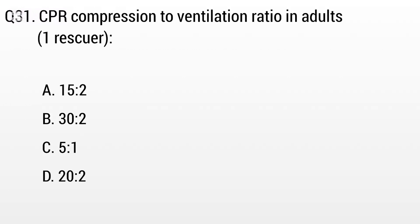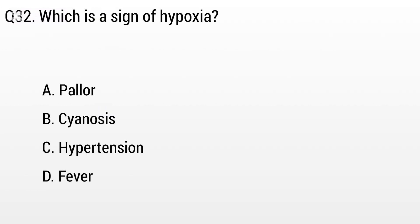Question 31: CPR compression-to-ventilation ratio in adults? The right answer is option B: 30 to 2. Question 32: Which is a sign of hypoxia? The right answer is option B: Cyanosis.